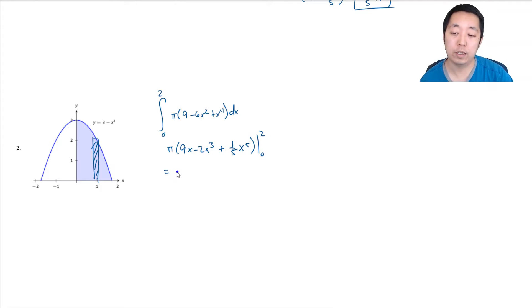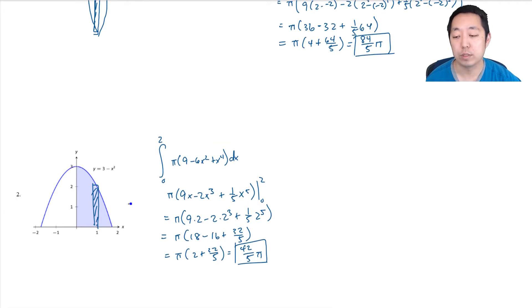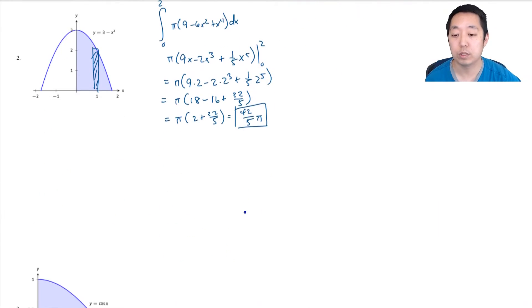Now when I plug in 0, none of them matter. It's going to be π times (18 - 16 + 32/5). That's π times (2 + 32/5). That's 10/5, so that's 42/5 π. And by the way, that's half of this one here, right? Which makes sense. I only did half the region, like if I think about the three-dimensional shape it makes.